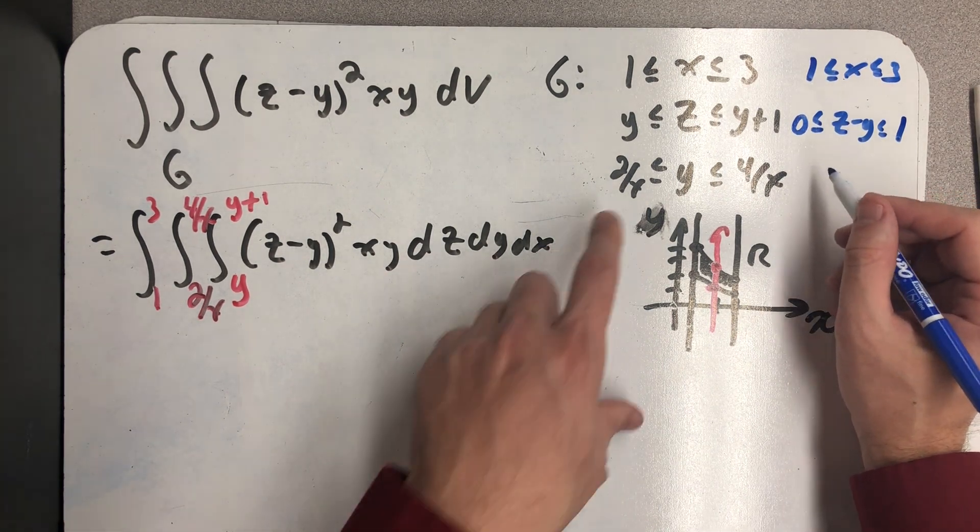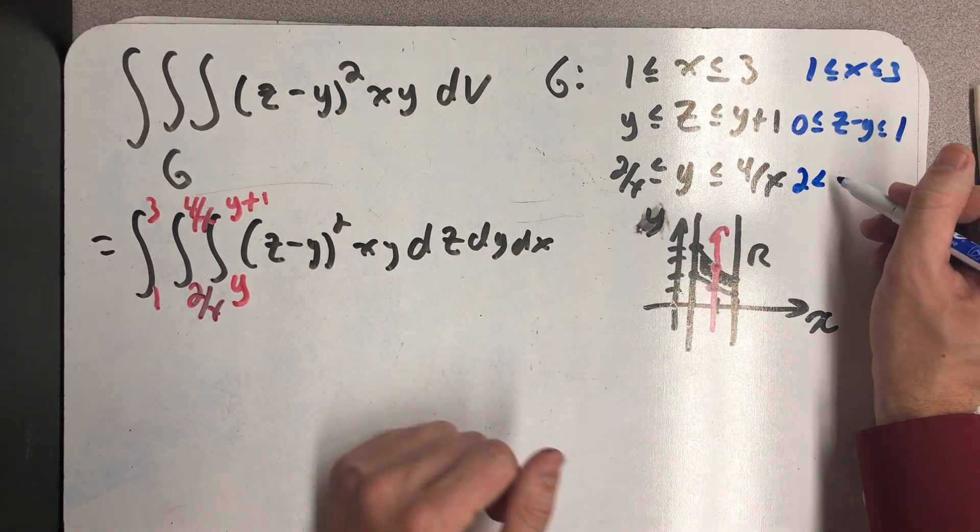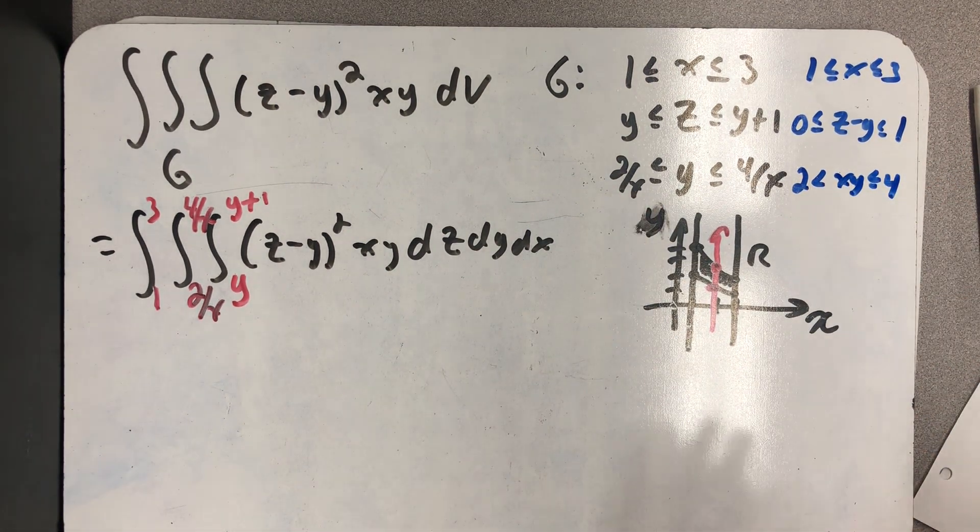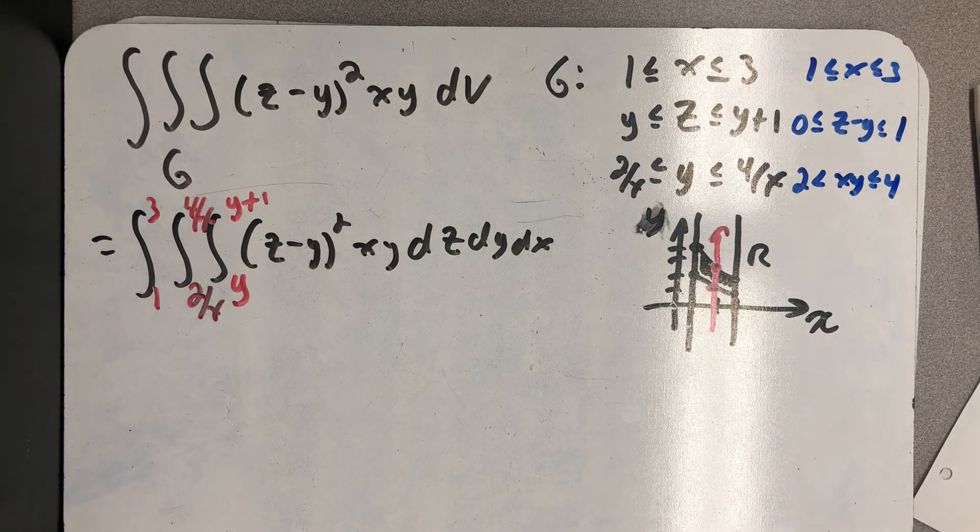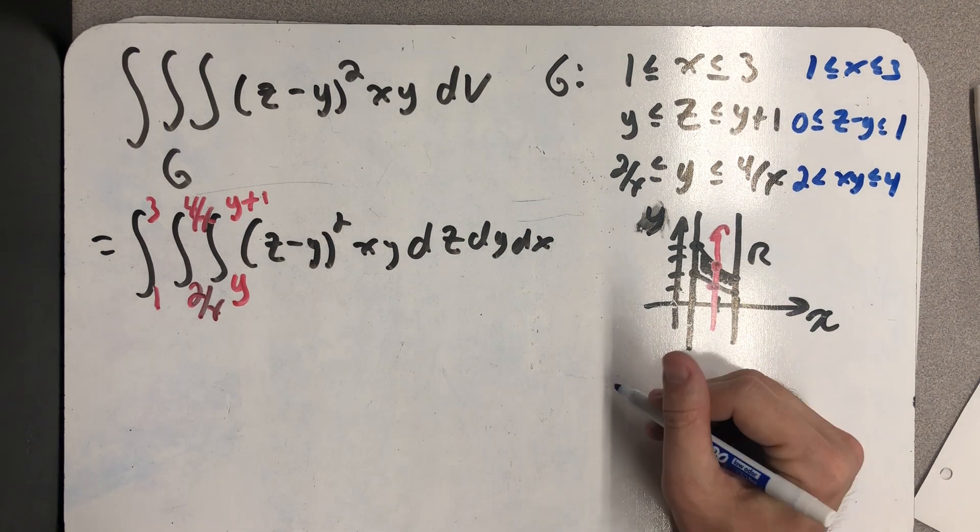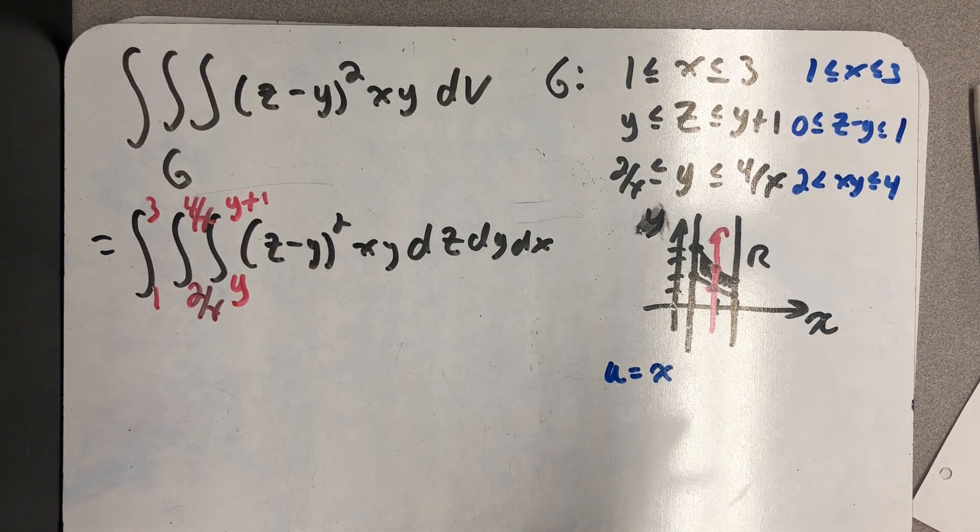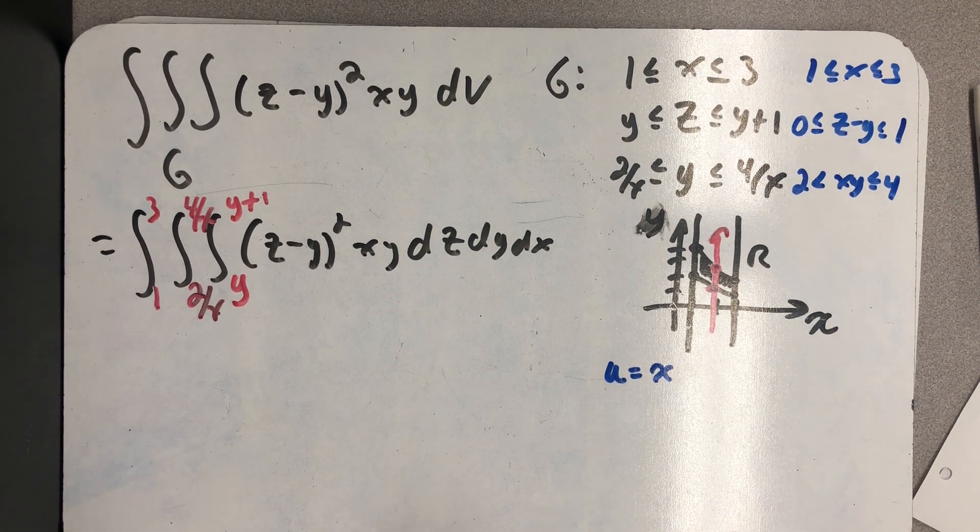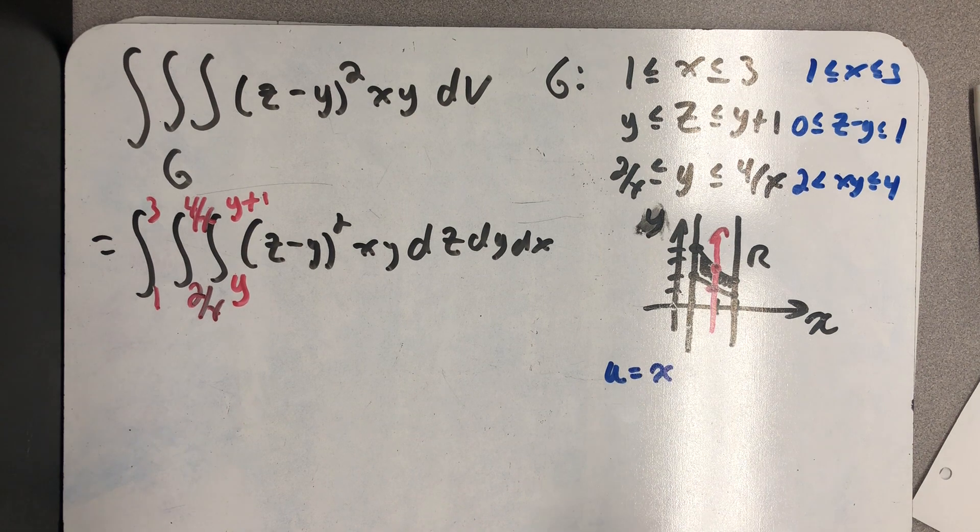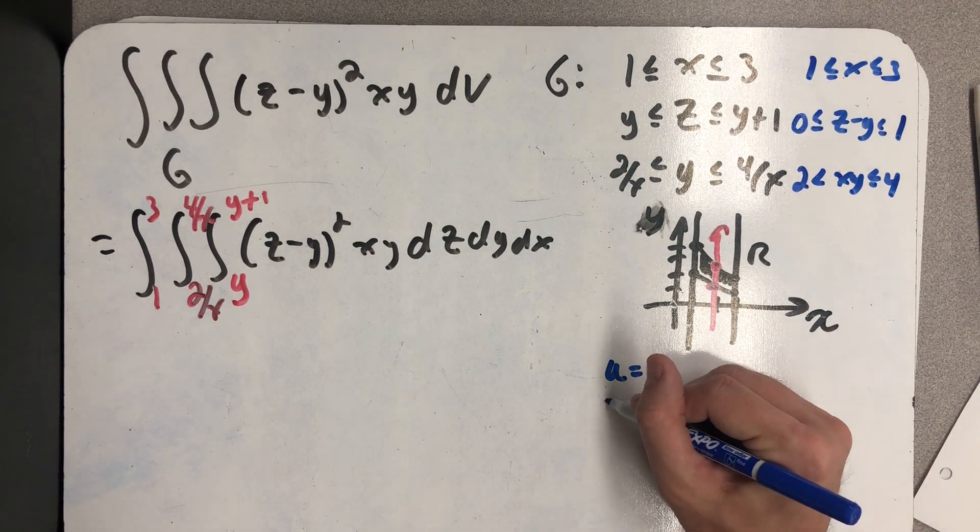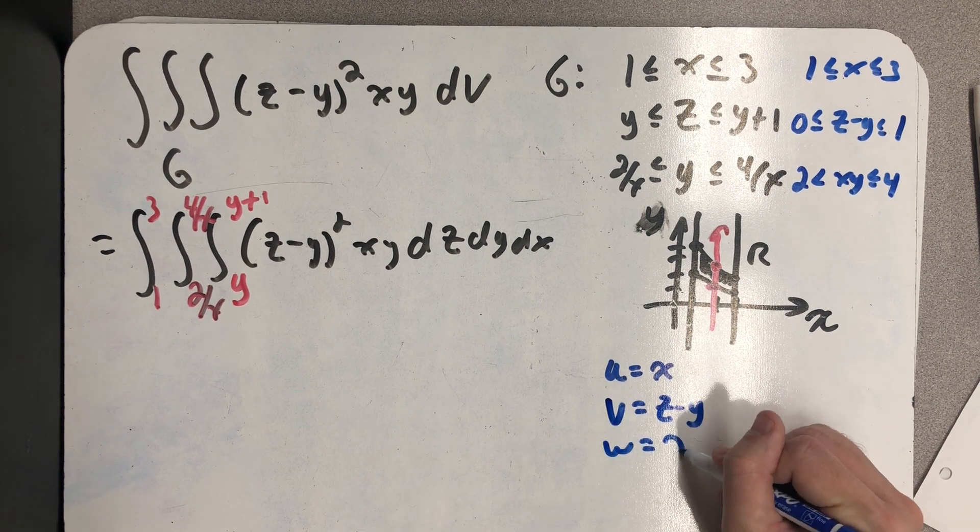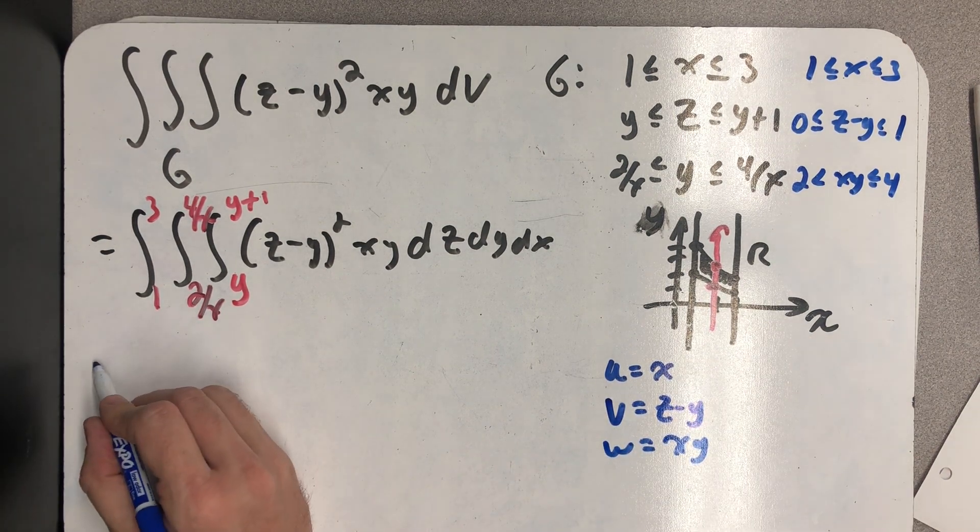I see an x times y here, and cleverly, if I multiply all three pieces of this inequality by x, I get that x, y is between two and four. And so I think I see a substitution that I could try. I'm not going to do anything interesting with the x. I could, in fact, just let x be x. But I'm going to let u equal x, just because I'm used to using u's, v's, and w's on these substitution problems. I'm going to let v equal z minus y. And I'm going to let w equal x times y.